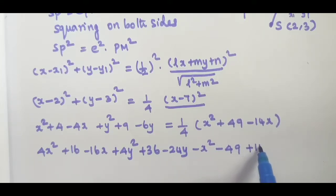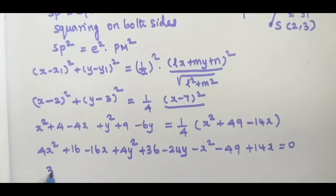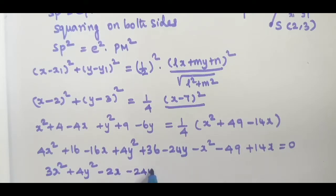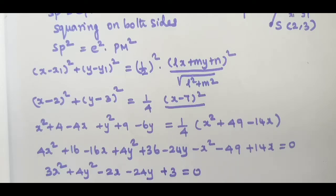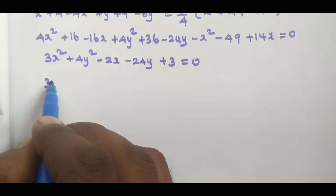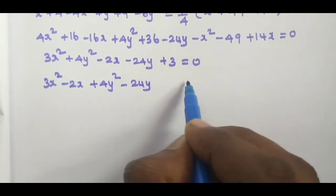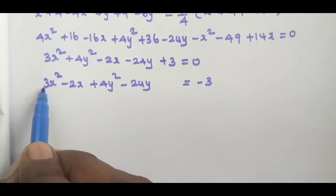Rearranging: minus x² − 49 + 14x = 0. Collecting terms: 3x² − 2x + 4y² − 24y + constant = 0. So 3x² − 2x + 4y² − 24y − 3 = 0.